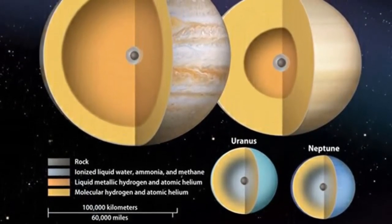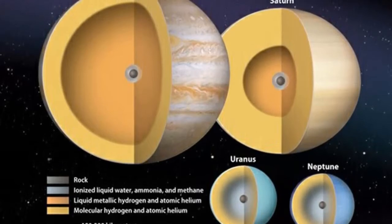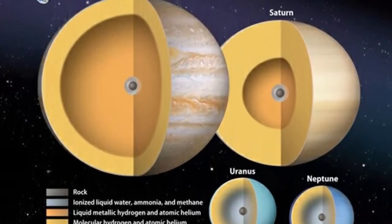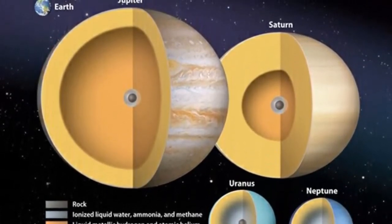The terrestrial planets are dense, consisting mostly of rocky and metallic substances, with minor amounts of ices.